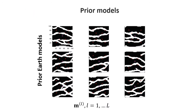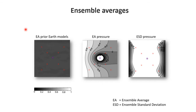Let's first look at the prior model distribution. We take the training image and generate a large set of realizations—all reflecting the geological understanding of the system but not matching any specific data. If we calculate ensemble averages by running flow simulations on all prior distributions, we get an ensemble mean that is simply a constant (since there's no information in the models), plus a pressure change due to pumping. The standard deviation of pressure shows almost no variation, except perhaps on the boundaries of the model.